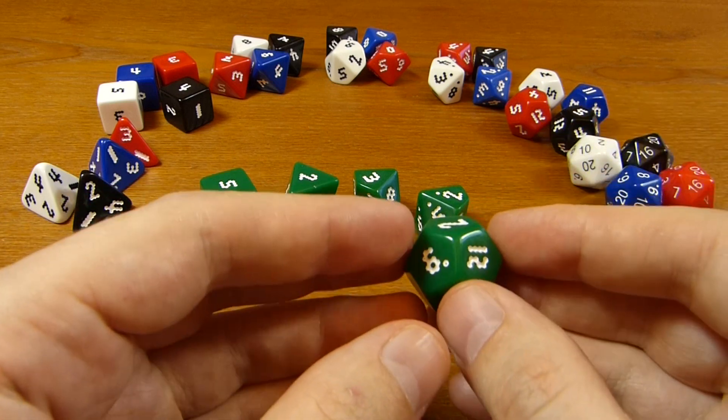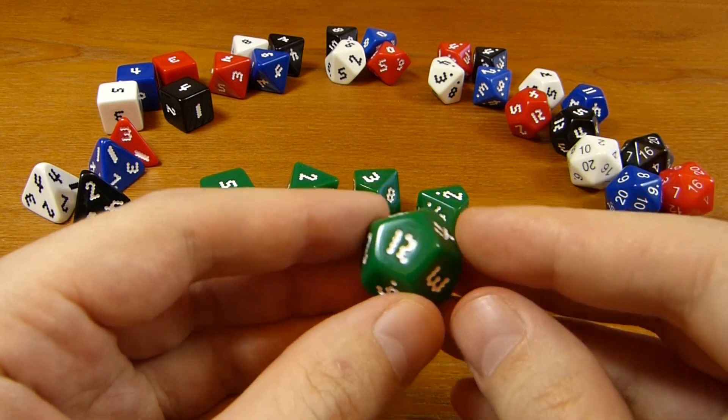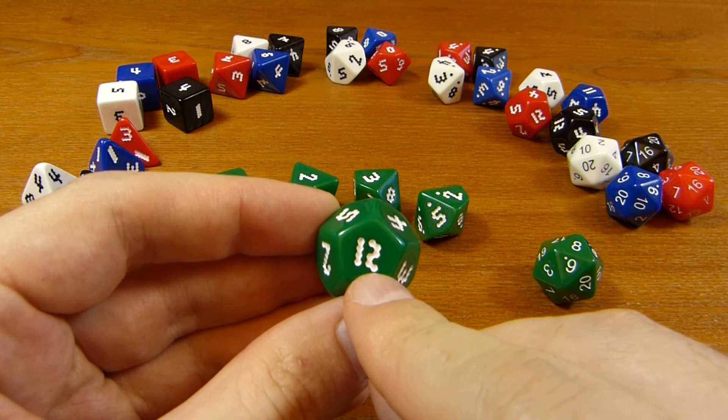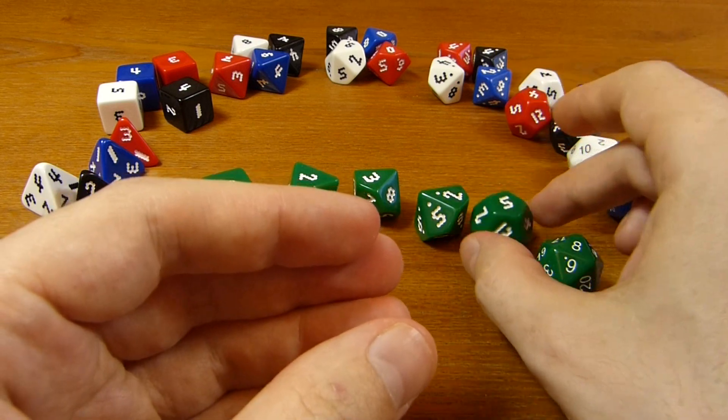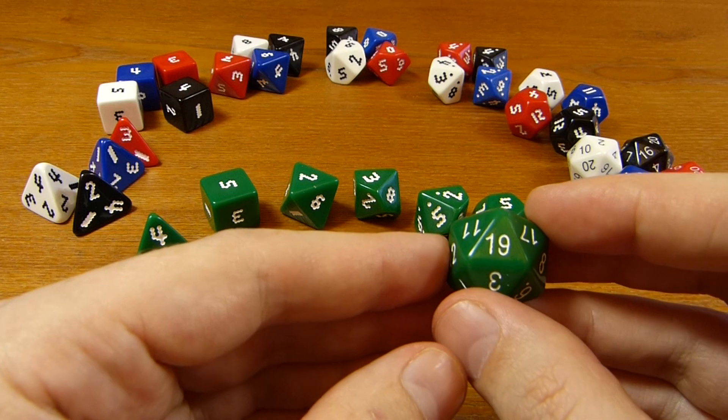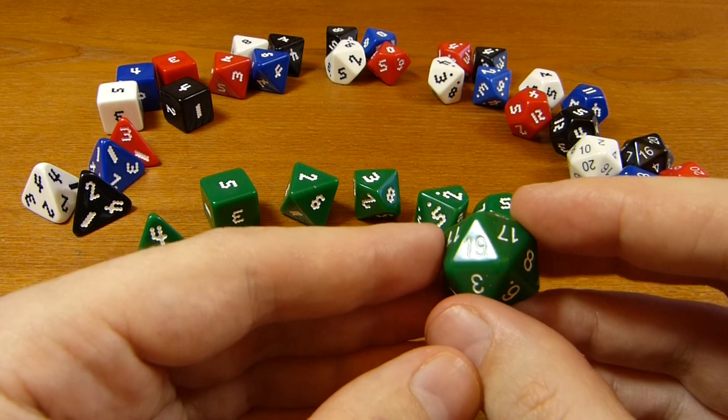We weren't able to do this for the D20 just because the numbers have to be quite small relative to the size of the face. And also, you'll see on the D12, we have to be a little bit clever here to write 12 using 10 hexagons, and it would not be so easy to write 19 using 10 hexagons as well. It wouldn't be very readable.